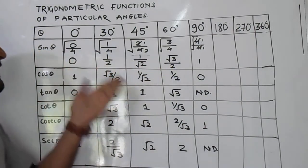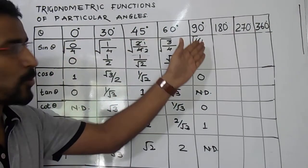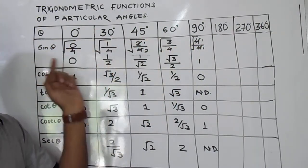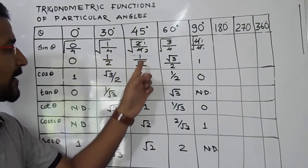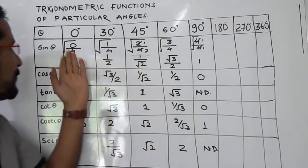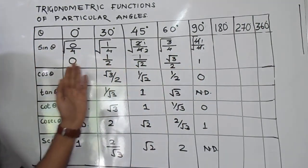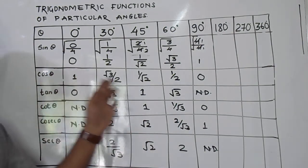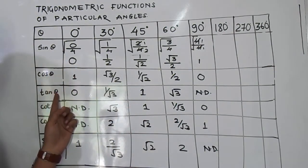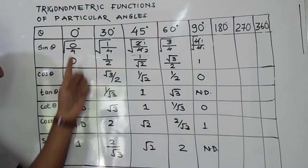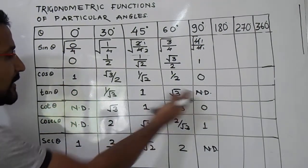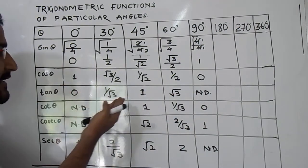For sin θ, just write 0, 1, 2, 3, 4, then divide the whole value by 4 and take the square root — giving 0, 1/2, 1/√2, √3/2, 1. If you know sin θ, just write in reverse order to get cos θ. Then sin θ divided by cos θ gives tan θ.